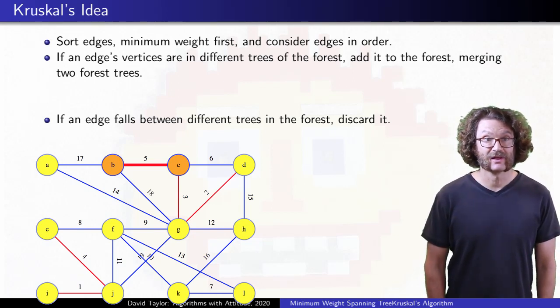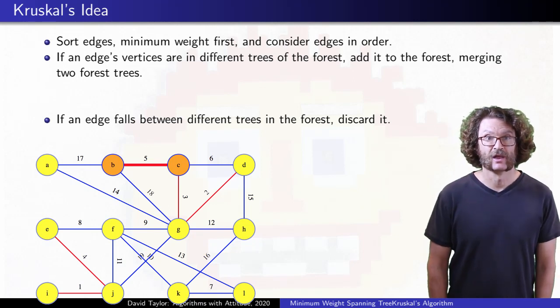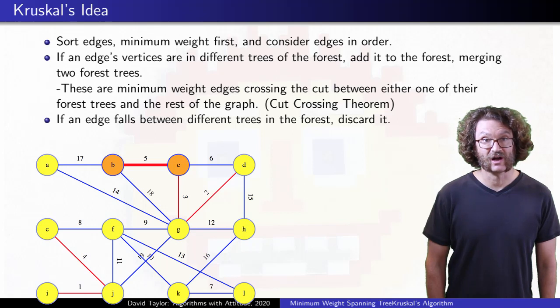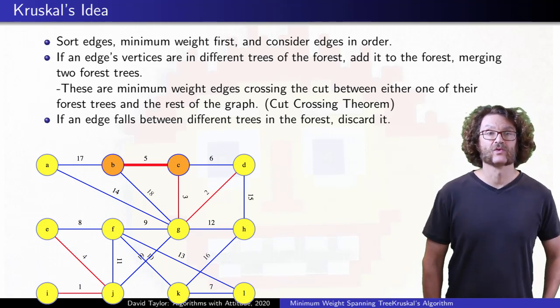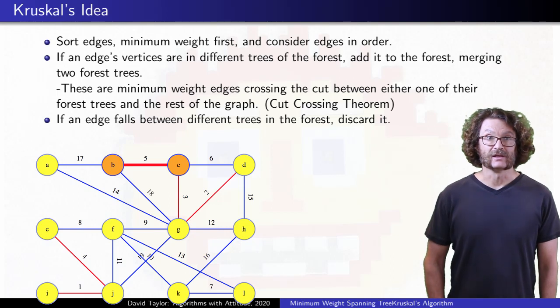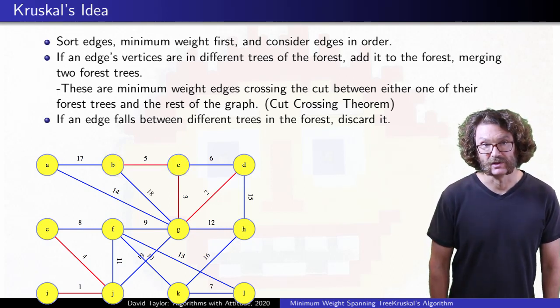So it's the lightest edge leaving the CGD tree. The lightest edge leaving any tree crosses the cut between the tree and the rest of the graph, so by the cut crossing theorem in the introduction video, it's in the Minimum Spanning Tree.